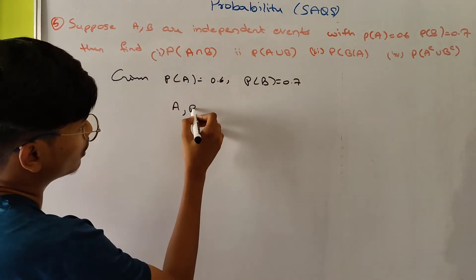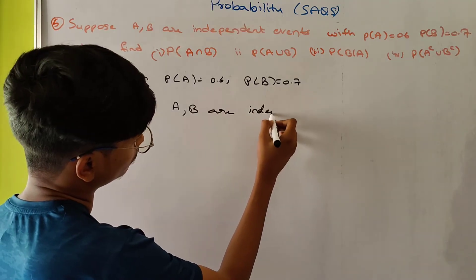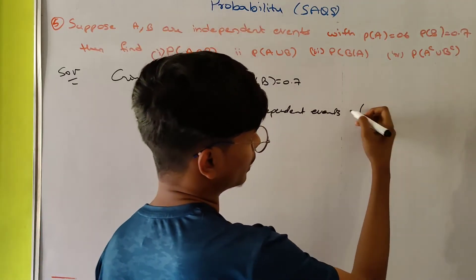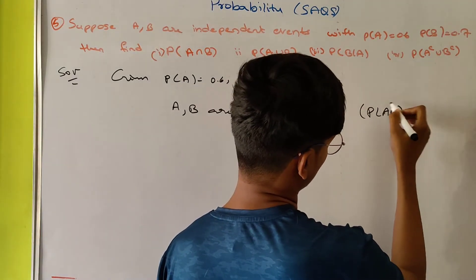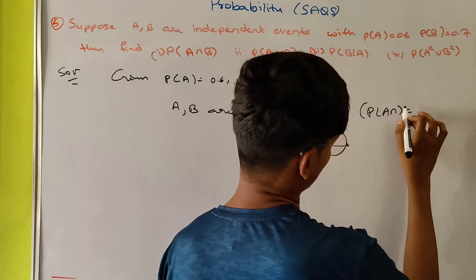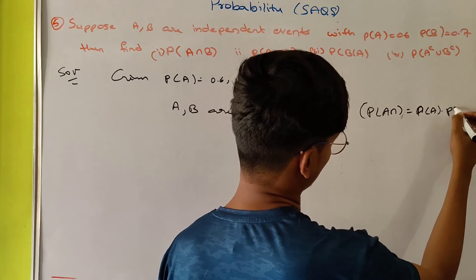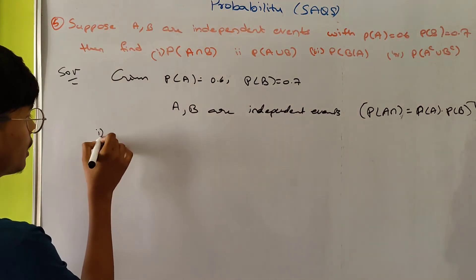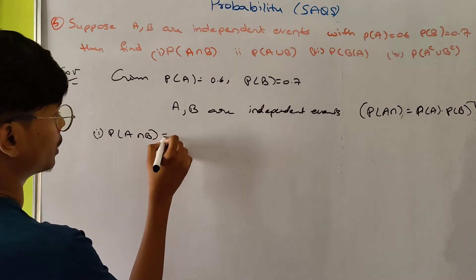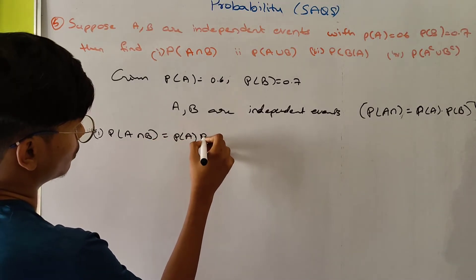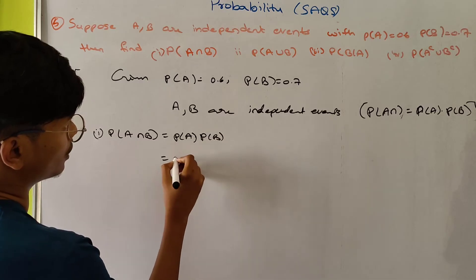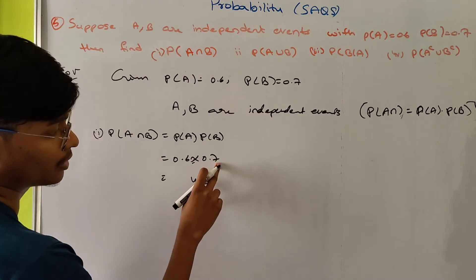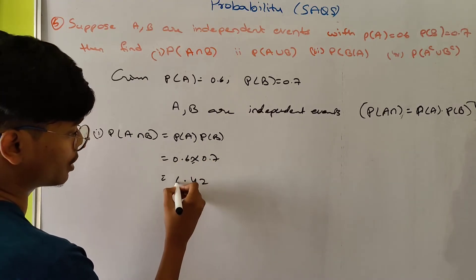A and B are independent events. For independent events, A intersection B: P(A intersection B) = P(A) into P(B) = 0.6 into 0.7 = 0.42.